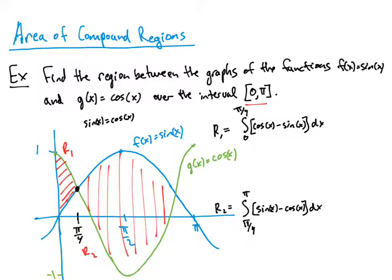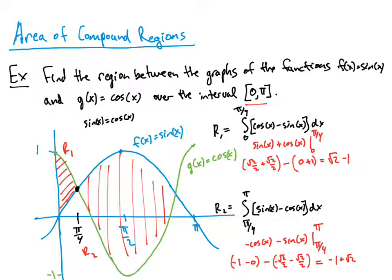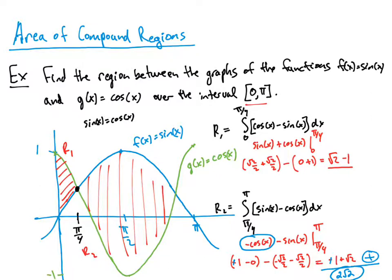Pause the video and evaluate each of these integrals, find the sum, and see what you get as your total. R1 gives an area of √2 minus 1. For R2, there's a small correction: cosine of π is negative 1, so negative cosine of π is positive 1. When we add the two areas together, we get √2 + √2 = 2√2, and −1 + 1 = 0. So 2√2 is our answer.